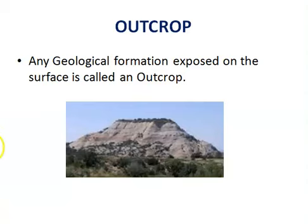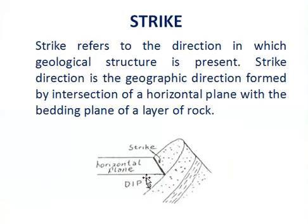Outcrop is simply defined as any geological formation exposed on the surface. The next term is strike. During the study of rock exposures at the surface, we measure the attitude of rocks in the field — how the rock strata are originally deposited or tilted, and if tilted, what is the angle of inclination. The basic terms used to measure the attitude of rocks in the field are strike and dip. Strike refers to the direction in which a geological structure is oriented. Strike direction is the geographic direction formed by the intersection of a horizontal plane with the bedding plane of a layer of rock.